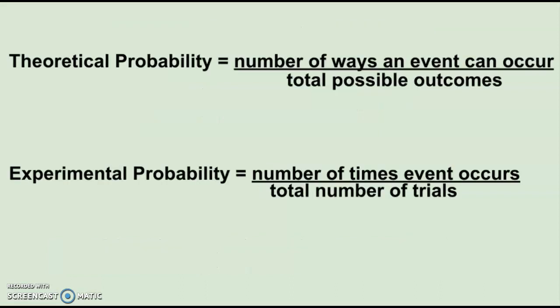In our past lessons, we have been primarily focusing on what is called theoretical probability. We defined probability as the number of ways an event can occur over the total number of possible outcomes. That's called theoretical probability because that's what should happen in theory. Probability is a likelihood and it is not an exact amount, but theoretical probability is what should happen in theory.